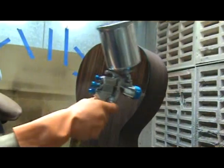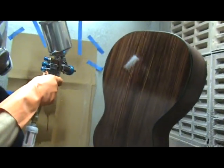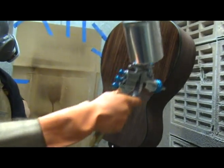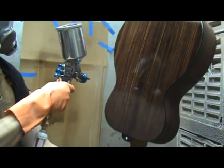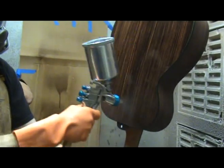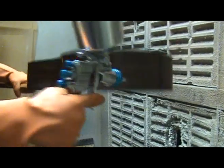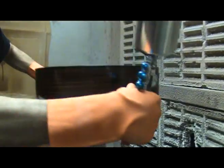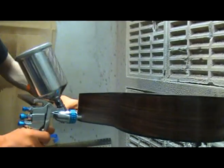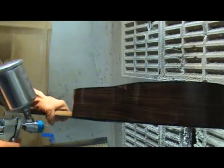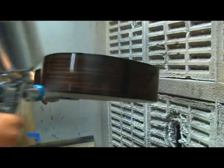After setup and testing, I begin spraying my guitar. I usually start with the back, making sure to overlap each pass by 50%. I then spray one side of the guitar, making sure to keep the gun the same distance from the side as I go. I then do the other side.